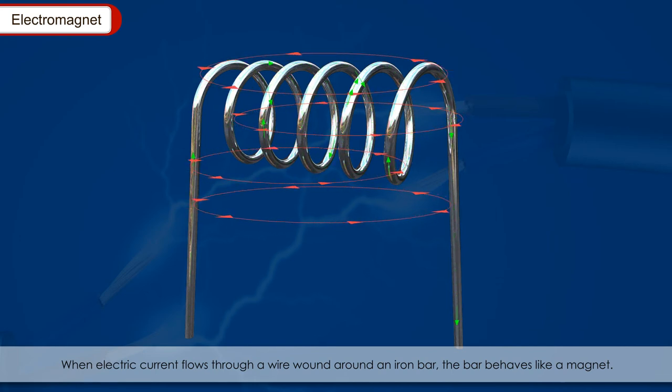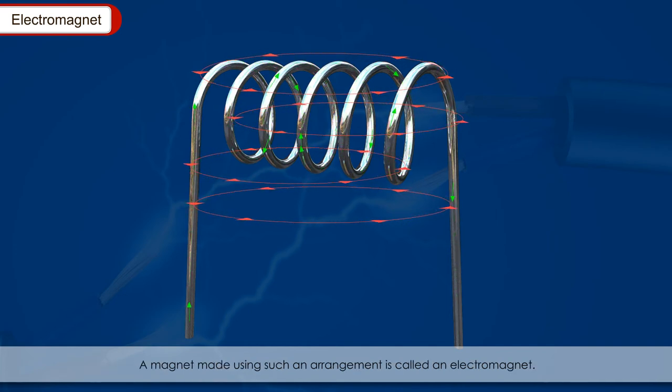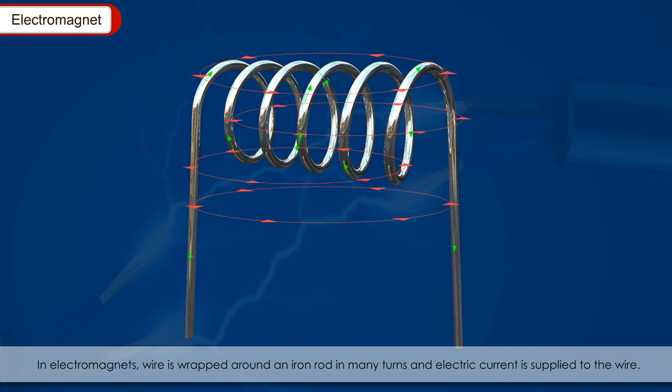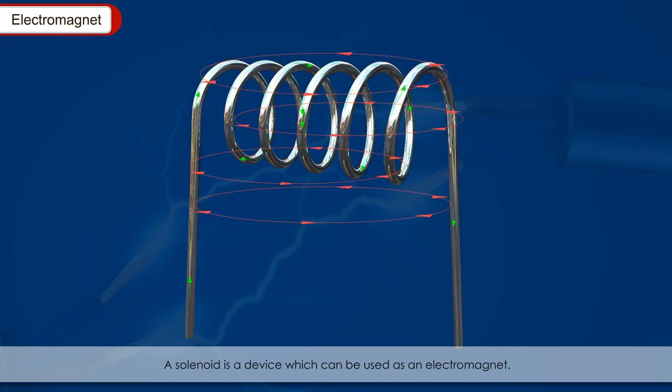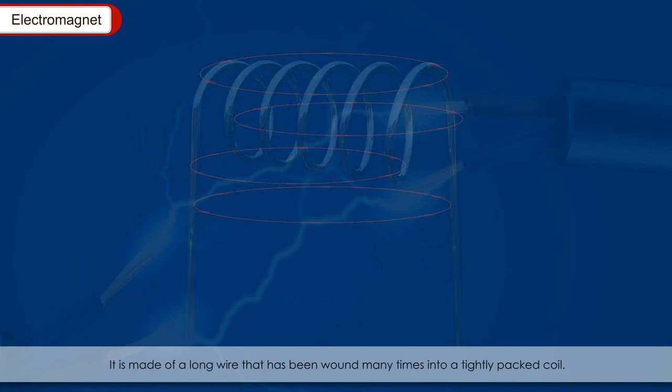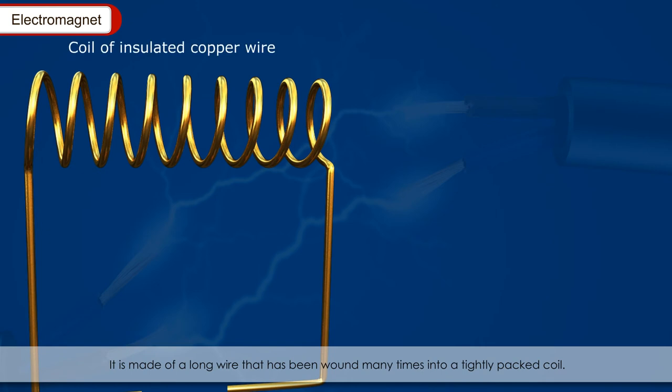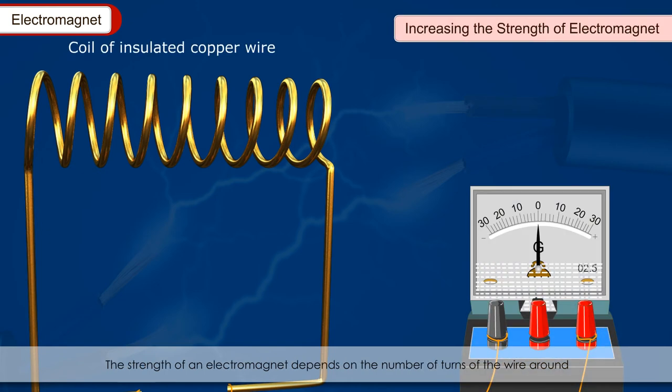Electromagnet: When an electric current flows through a wire wound around an iron bar, the bar behaves like a magnet. A magnet made using an arrangement is called an electromagnet. In electromagnets, wire is wrapped around an iron rod in many turns and electric current is supplied to the wire. As long as the current is supplied, the iron rod behaves like a magnet. A solenoid is a device which can be used as an electromagnet. It is made of a long wire that has been wound many times into a tightly packed coil, increasing the strength of an electromagnet.